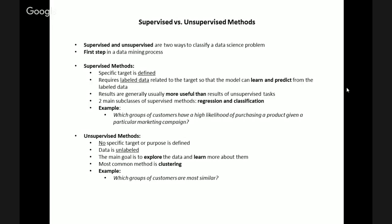An example of a supervised data science problem is the following: which groups of customers have a high likelihood of purchasing the product given a specific marketing campaign? This question could be answered via a segmentation task and will help the company determine exactly how effective its marketing promotion actually is.